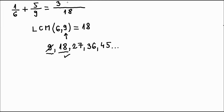Now I copy the plus. If I had a minus here, then I would copy the minus. Now I'm looking at the second fraction and thinking in the same way. I'm looking at the denominators nine and eighteen. With what do I need to multiply nine to get eighteen? The answer is two. So I will multiply the numerator five by two as well. Five times two is ten.